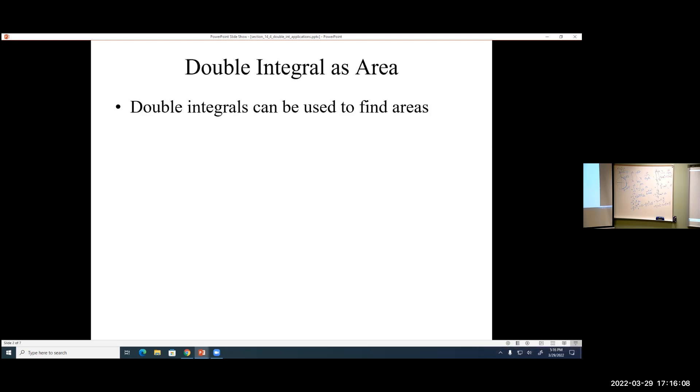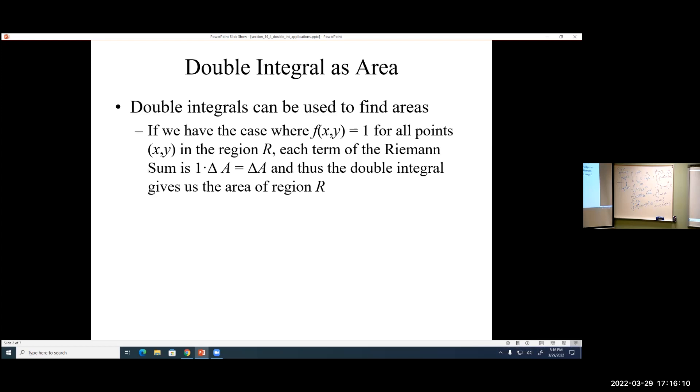We already know double integrals can be used to find areas. If you set the function to be one, then what the double integral is doing is finding the area of this region. Same thing would go with this example. If this function was just set to be one, then we'd actually just be finding the area of that half circle.